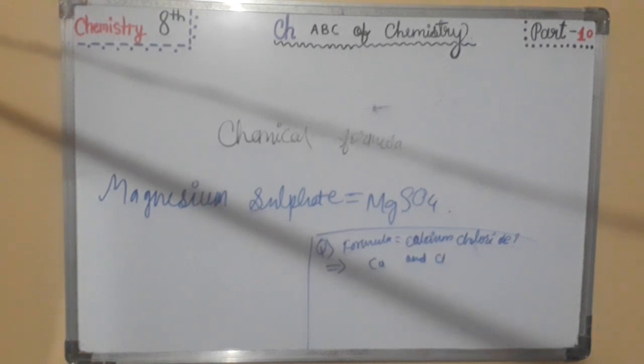Then, step two is, enclose the complex ions in a bracket. Since in this there are no complex ions, so they can be left as they are.